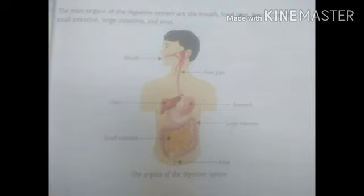You can see that in the picture — from mouth to anus, it is called the digestive system or digestive tract.